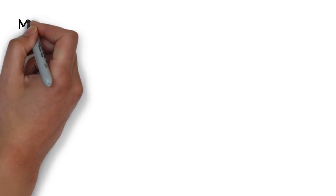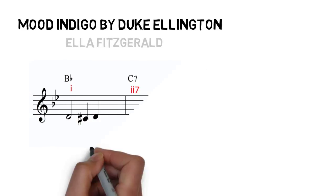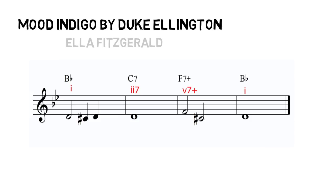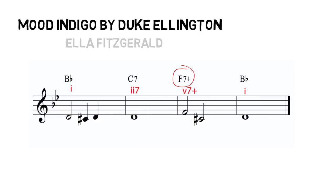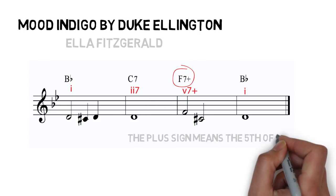Let's listen to it in action: 'Mood Indigo,' sung by Ella Fitzgerald — another classic by Duke Ellington. As you can see, that's in B-flat; the second chord is C seven, which resolves to F seven, and has lovely coloring — a sharp-five sound giving a mysterious color to the piece.